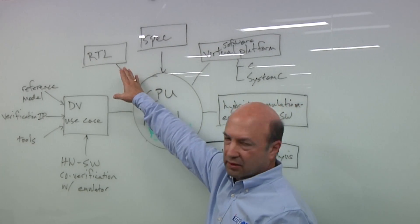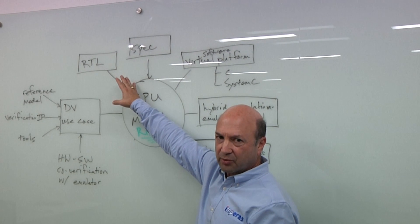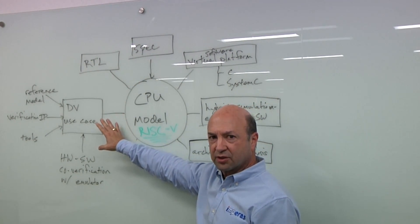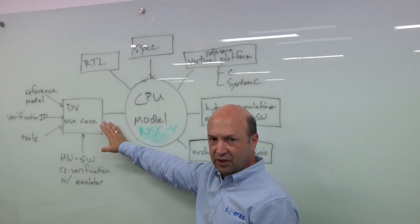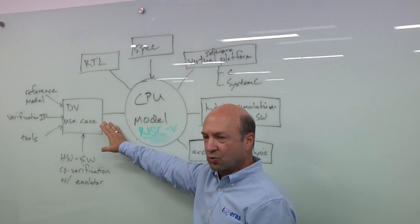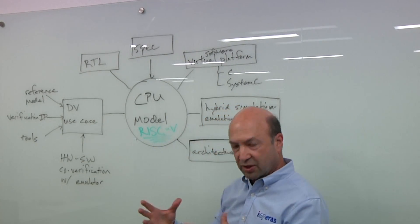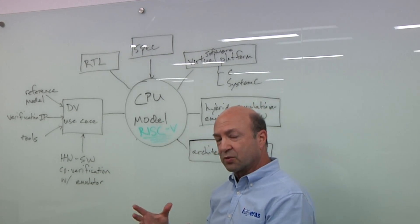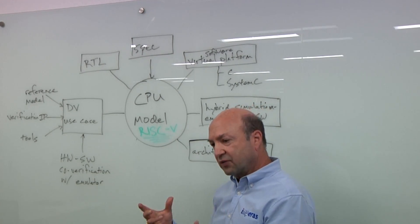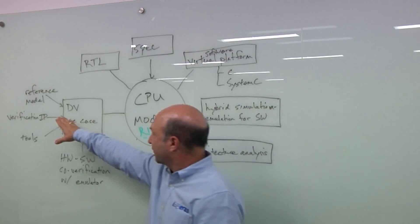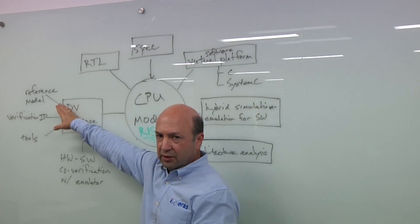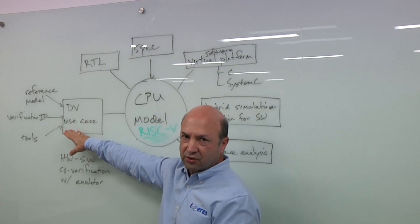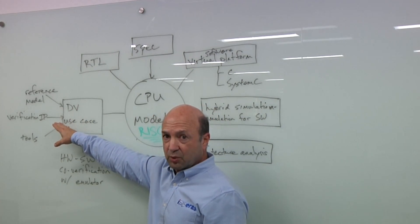You've also got the RTL implementation of that processor sitting over here. The first use case I'd like to talk about is the verification use case, the DV use case for the processor model. And this is something an instruction set simulator has been used for. It's a reference model for the DV use case. And so we've got that reference model here, but actually there are some other things that come into the DV use case as well. One of these is verification IP.